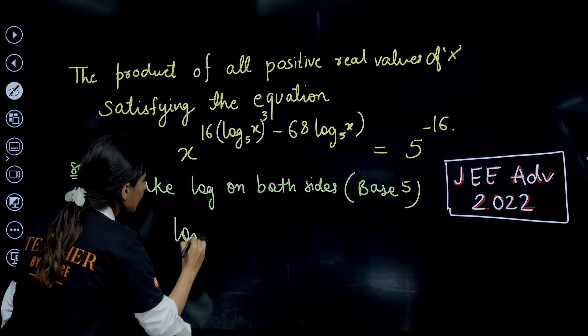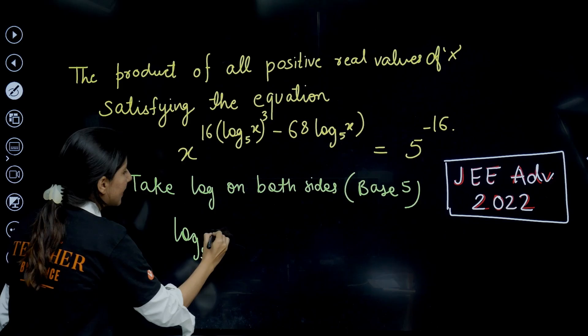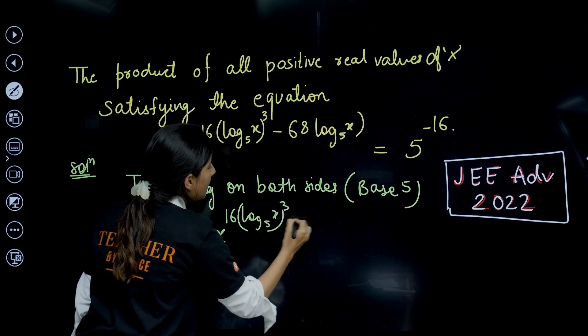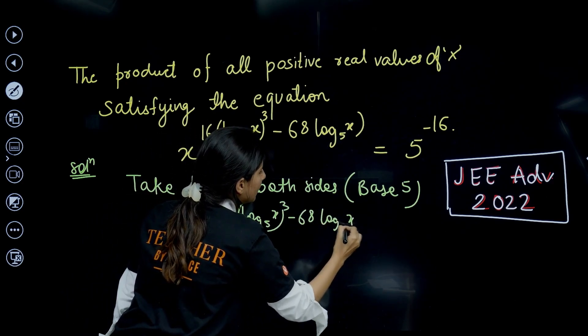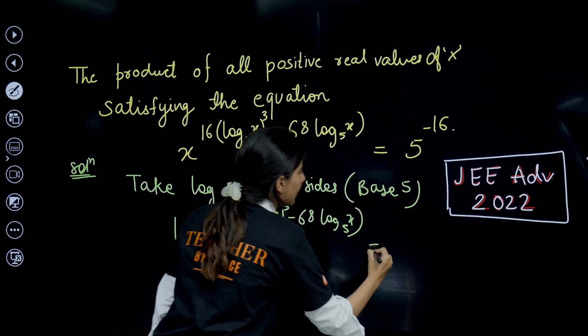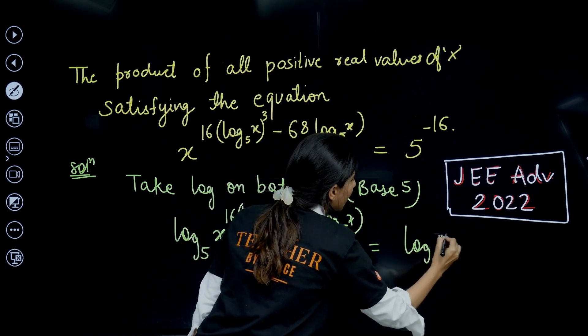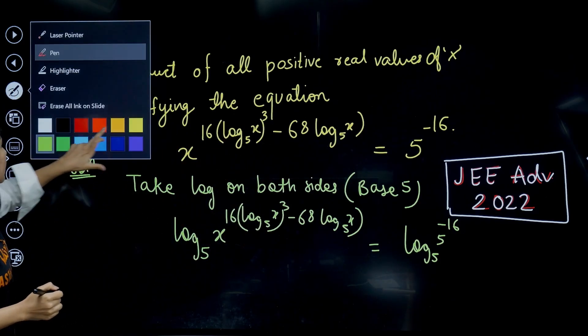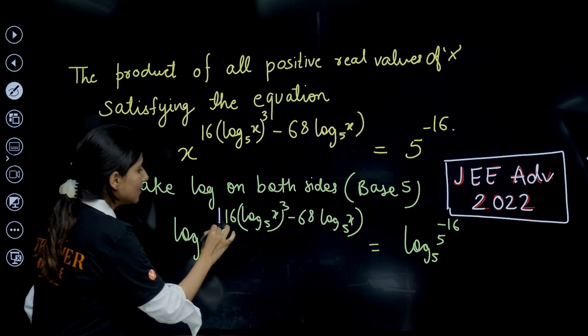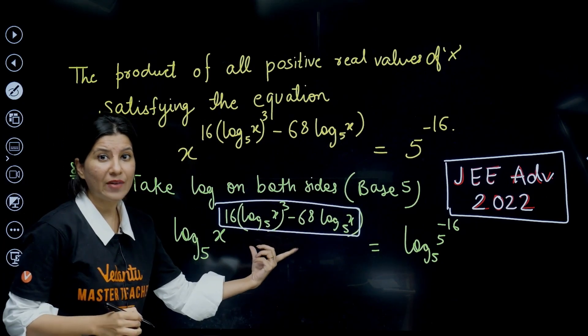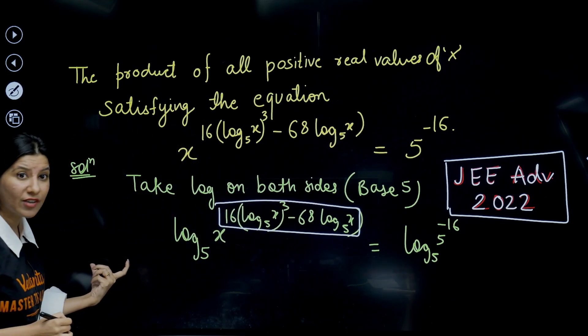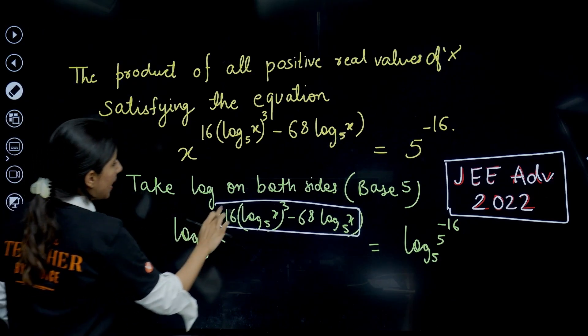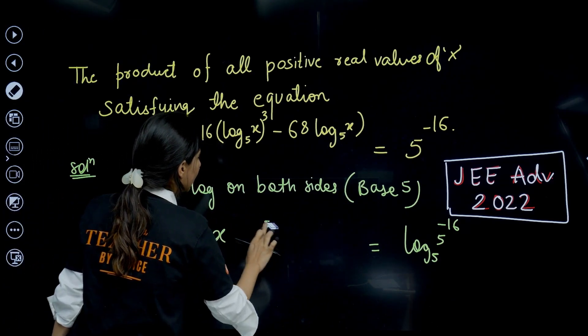If I take log of this expression to the base 5 on both the sides, what do I get? I get log of x to the base 5 raised to power [16(log x to the base 5)³ - 68 log x to the base 5] and on the right hand side we are going to have log 5 to the base 5 power minus 16. This is your power, so this power by the property will bounce in front.